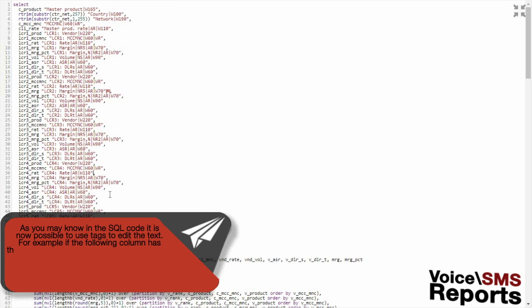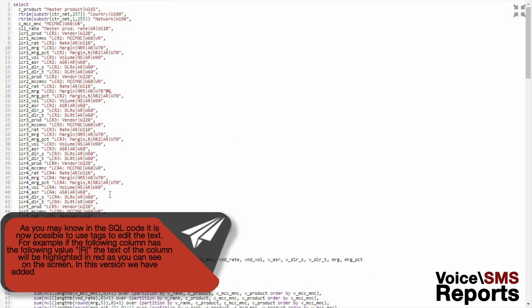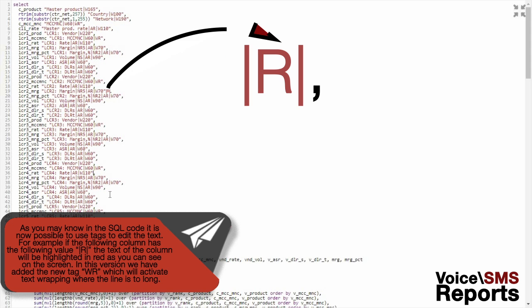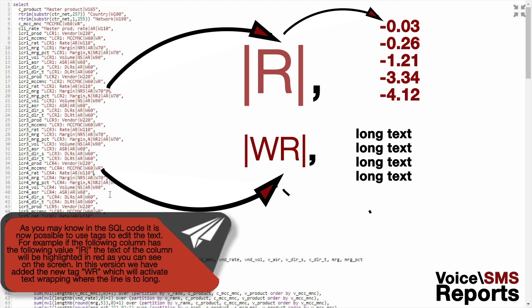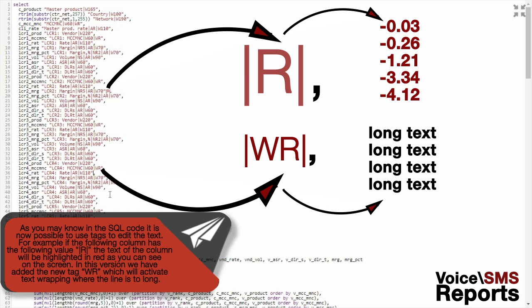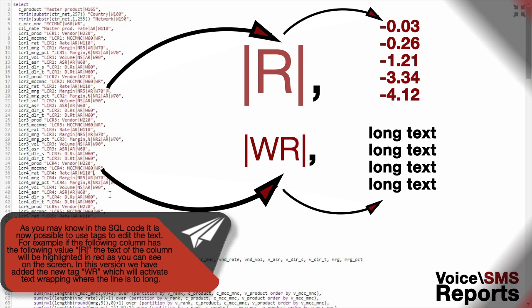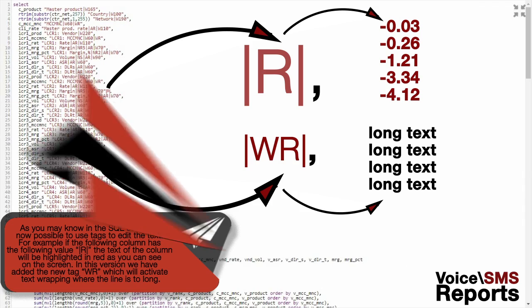In the SQL code, it is now possible to use tags to edit the text. For example, if a column has the value R, the text of the column will be highlighted in red as you can see on the screen. In this version, we have added the new tag WR which will activate text wrapping where the line is too long.